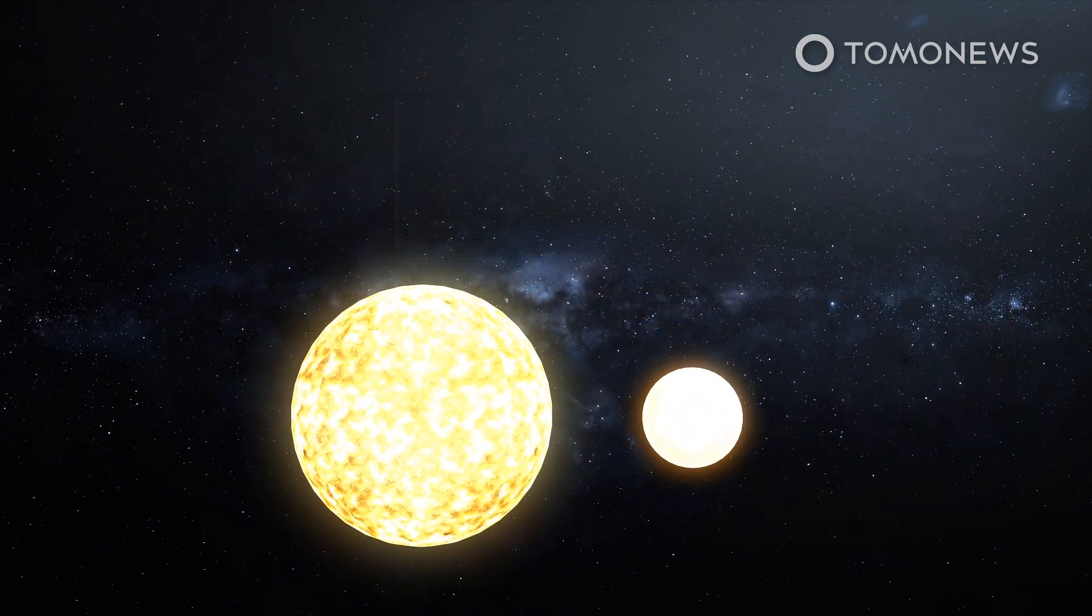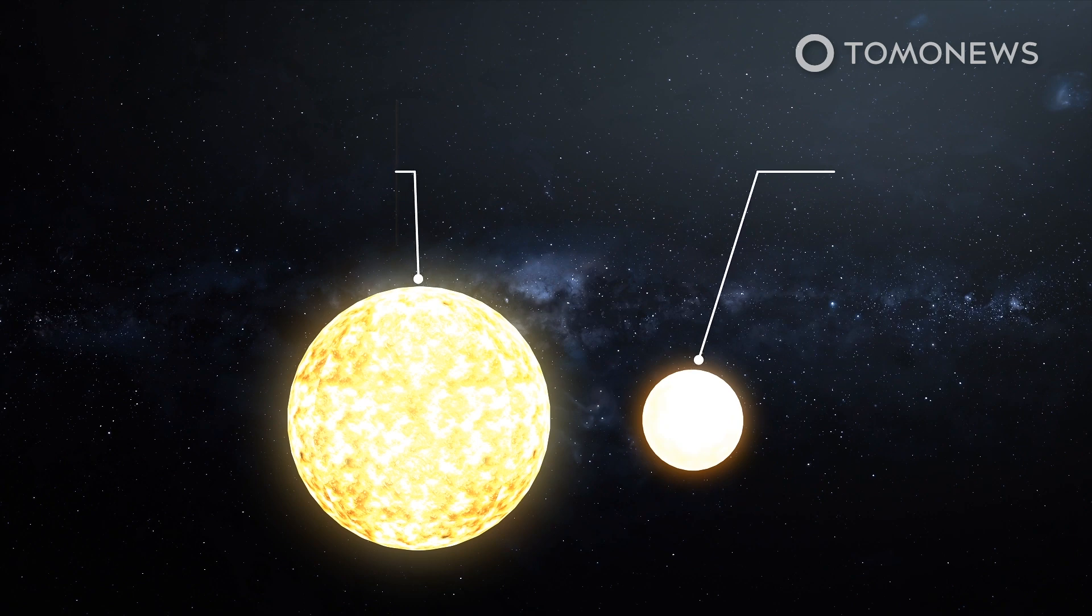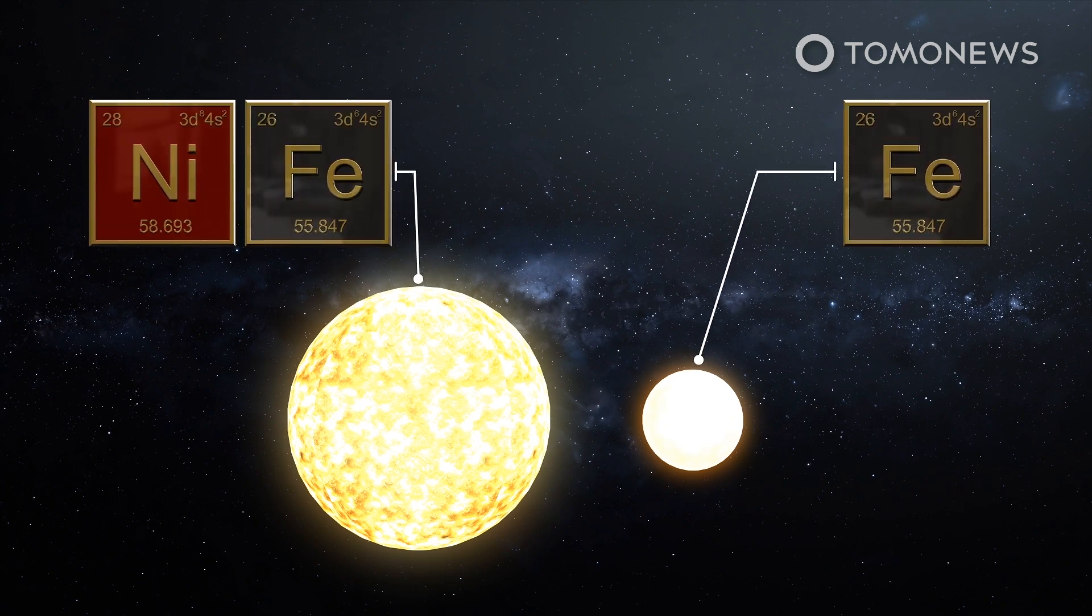According to the study, which was published in the Journal of Geophysical Research, the inner core is made primarily of iron and nickel, while the innermost core is composed mainly of iron and is around two-thirds the size of the Moon.